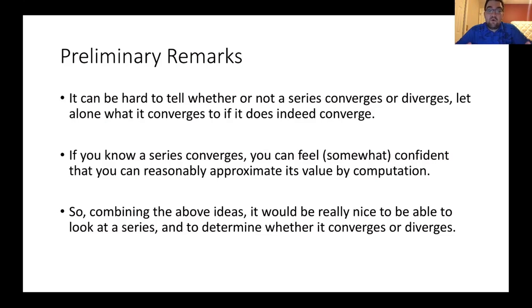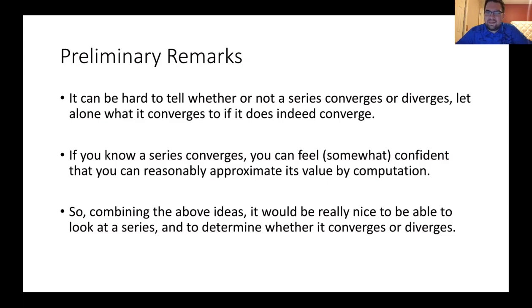Even if we know that a series does converge, how do we figure out what value it converges to? The sum of reciprocals of squares — the sum from n equals one to infinity of one over n squared — we felt pretty confident it converged because the sequence of partial sums leveled off very quickly. It looked like it was converging to roughly 1.64, but I told you it was actually pi squared over six. So how on earth would you figure that out?